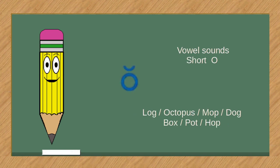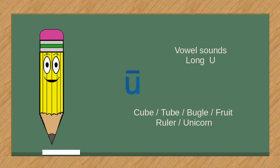Vowel sounds, short O. Log, octopus, mop, dog, box, pot, hop.